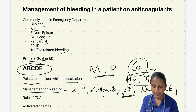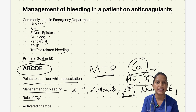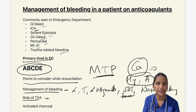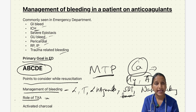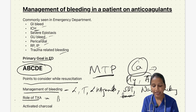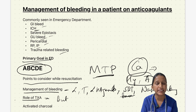Regarding tranexamic acid in anticoagulated patients: according to various studies, tranexamic acid did not reduce mortality and doubled the risk of venous thromboembolism in anticoagulated patients. It is therefore generally not preferred, but can be considered in trauma-related bleeding, where one gram can be given within the first three hours.